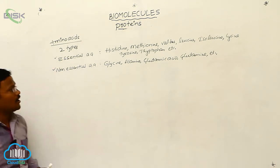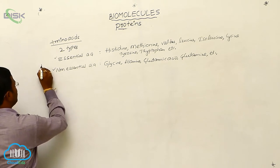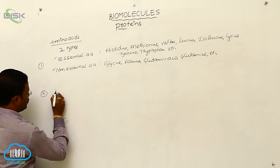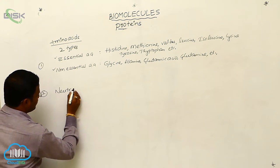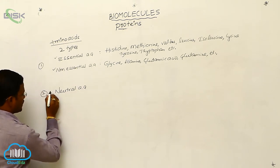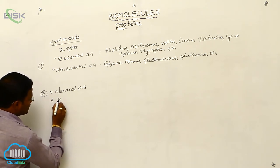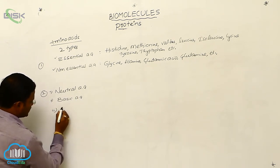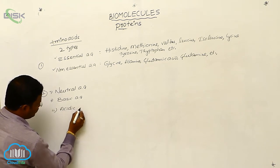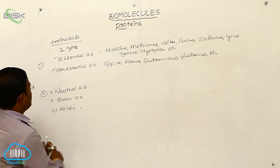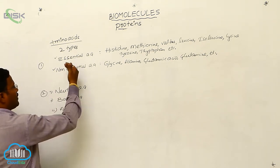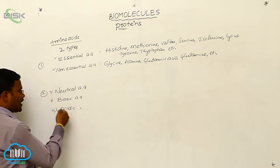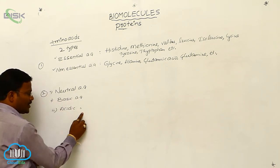There is one more type of classification. We can classify amino acids into three categories: neutral amino acids, basic amino acids, and acidic amino acids. So one type of classification is based on availability — essential and non-essential amino acids — and in another type we classify into neutral, basic, and acidic amino acids.